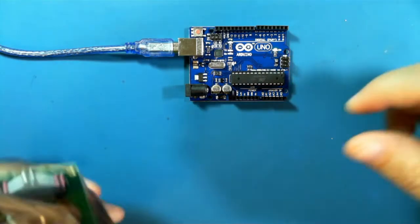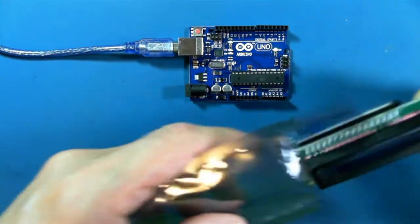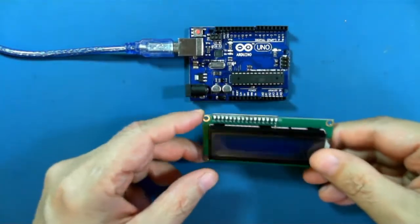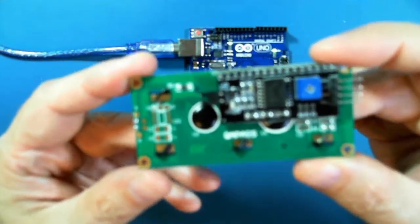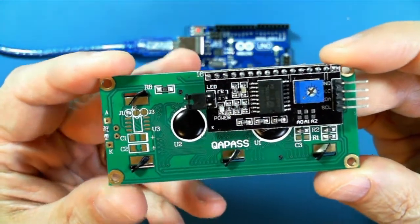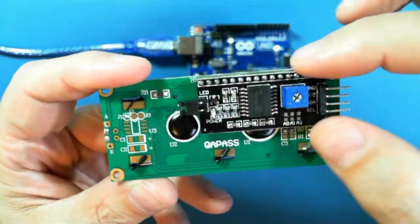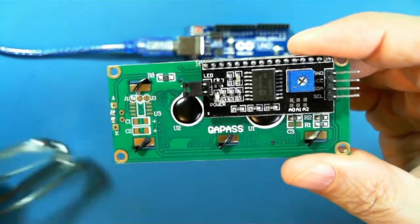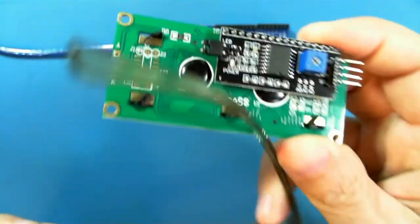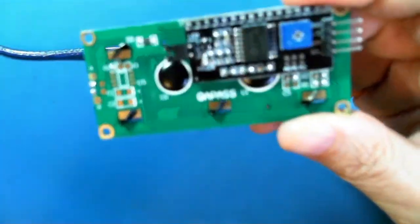So your LCD display looks like this. It has a module on top of it and this module uses a special kind of chip.